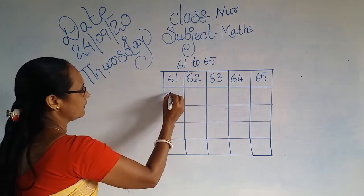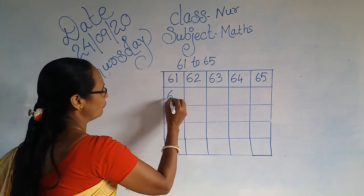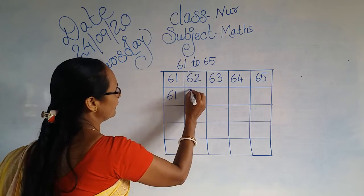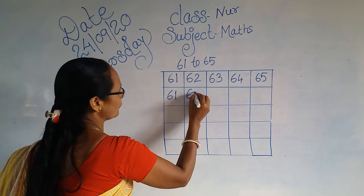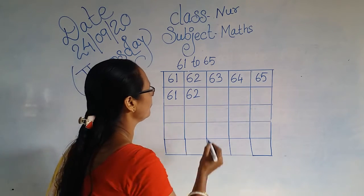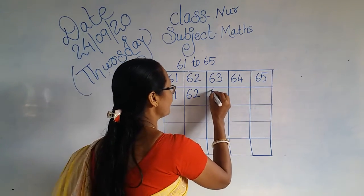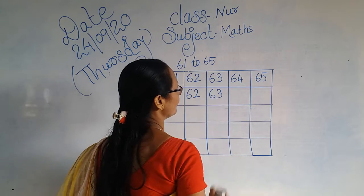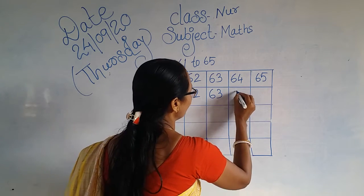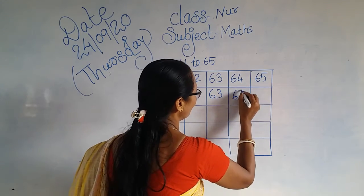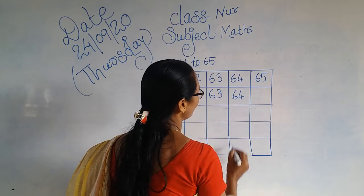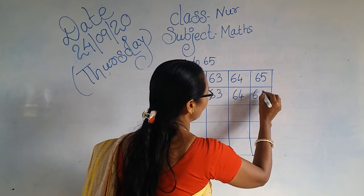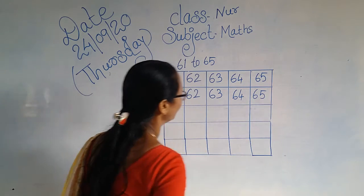Again: 6, 1 — 61. 6, 2 — 62. 6, 3 — 63. 6, 4 — 64. 6, 5 — 65.